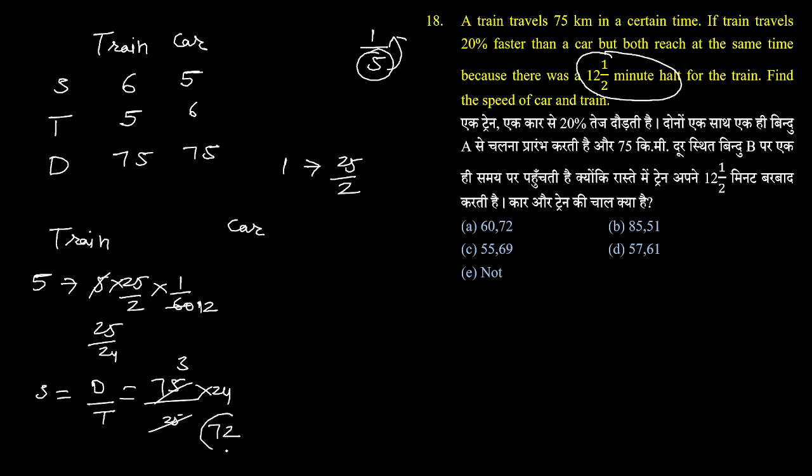75 into 24 multiply करूँगा 72. ट्रेन के जो speed है वो तो मेरे पास 72 आ गई अगर आभी option देखता हूं तो 72 यहां दिख रही है.